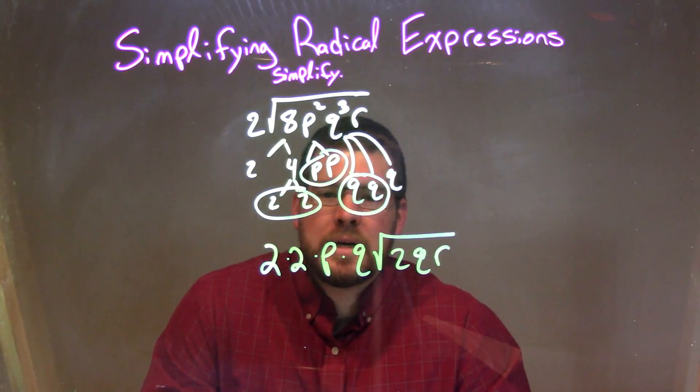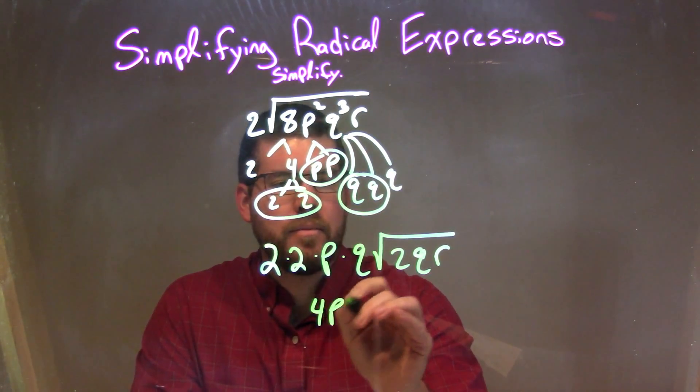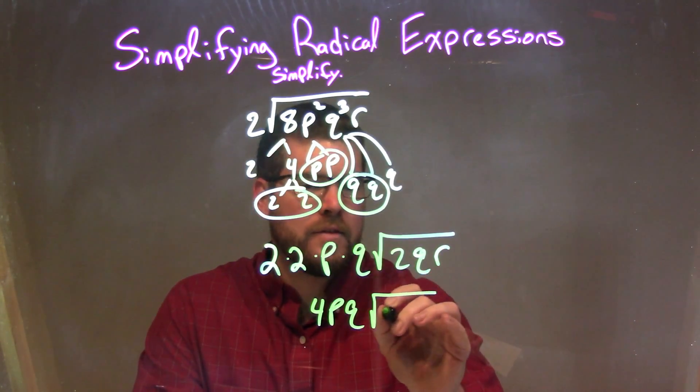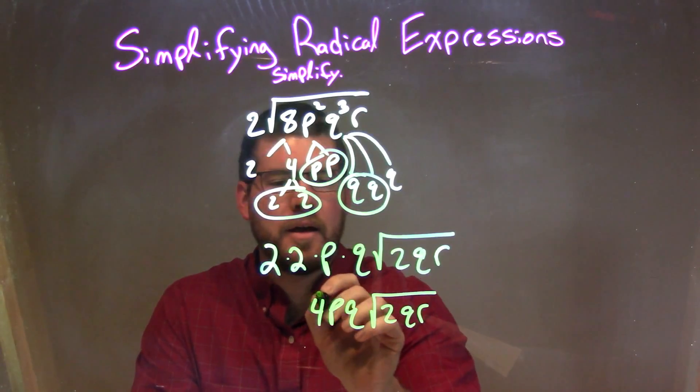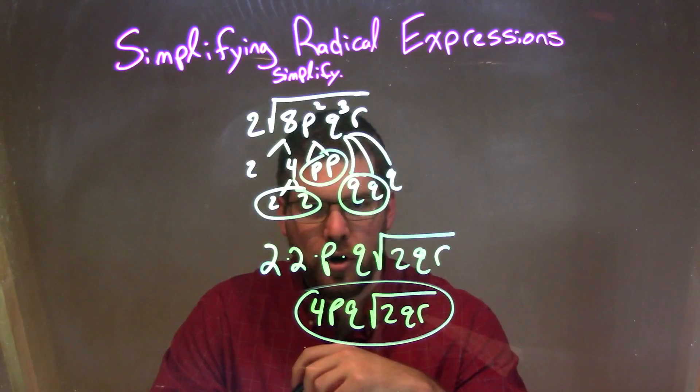Now we're going to simplify this. 2 times 2 is 4. pq times the square root of 2qr. And there we have it, our final answer: 4pq times the square root of 2qr.